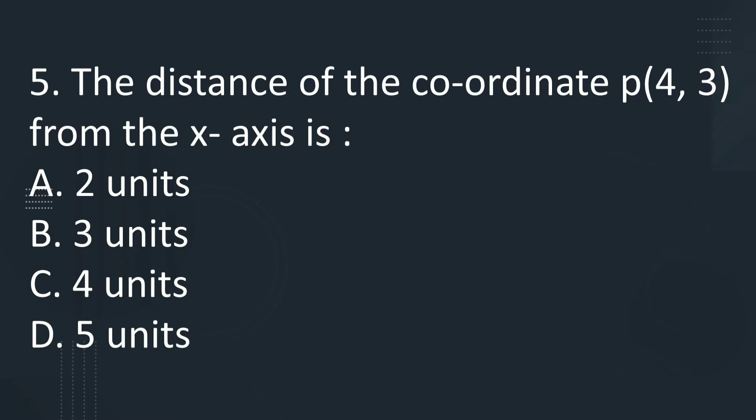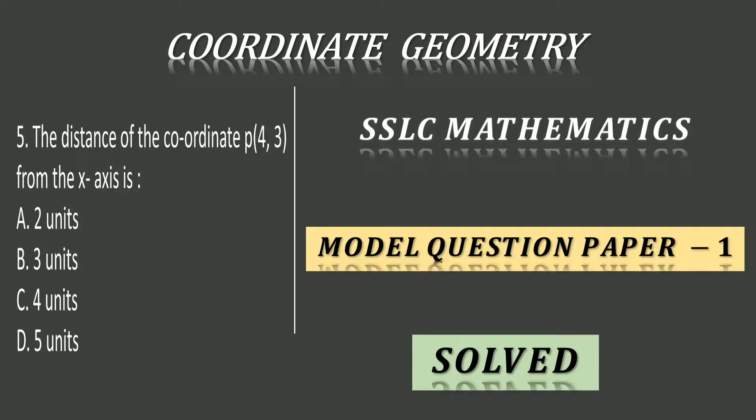Distance of the coordinate p(4,3) from the x-axis is: Option A, 2 units; B, 3 units; C, 4 units; D, 5 units.